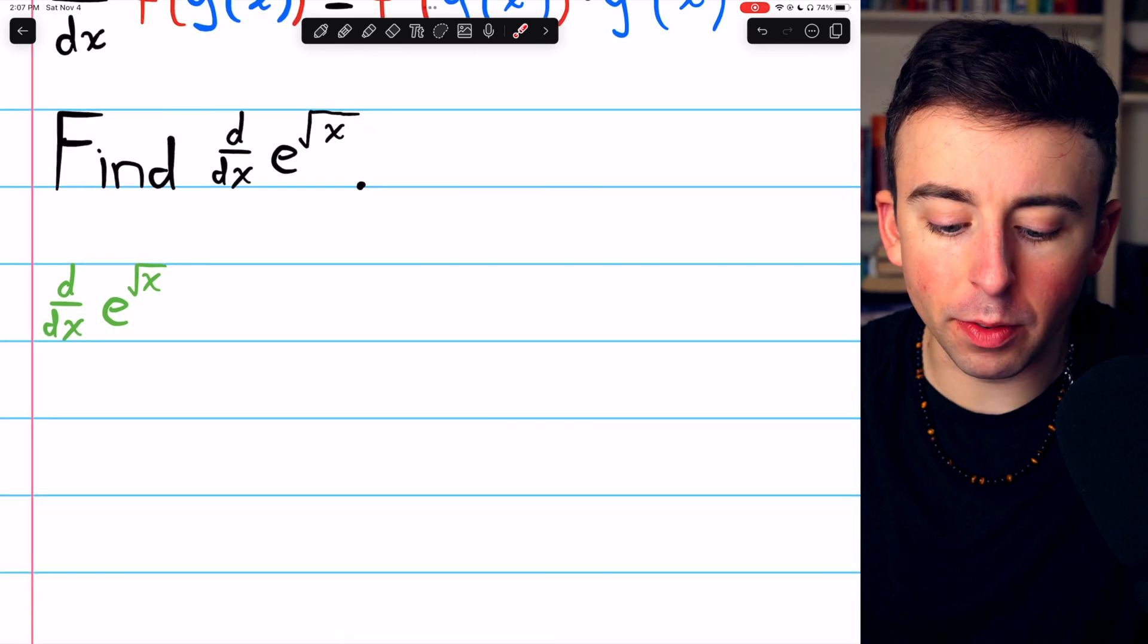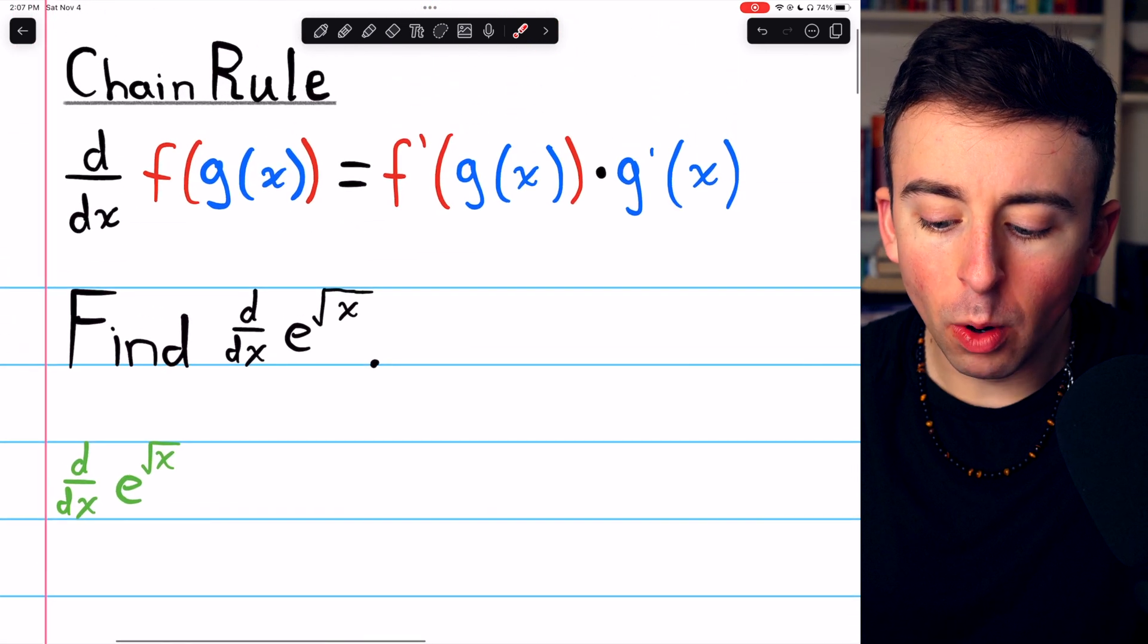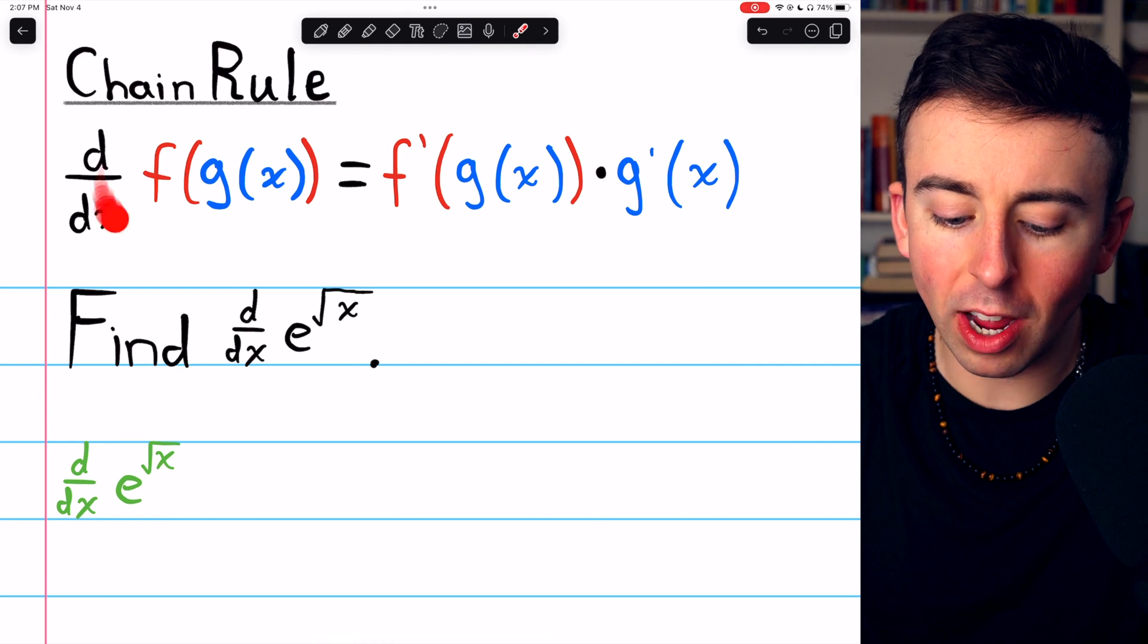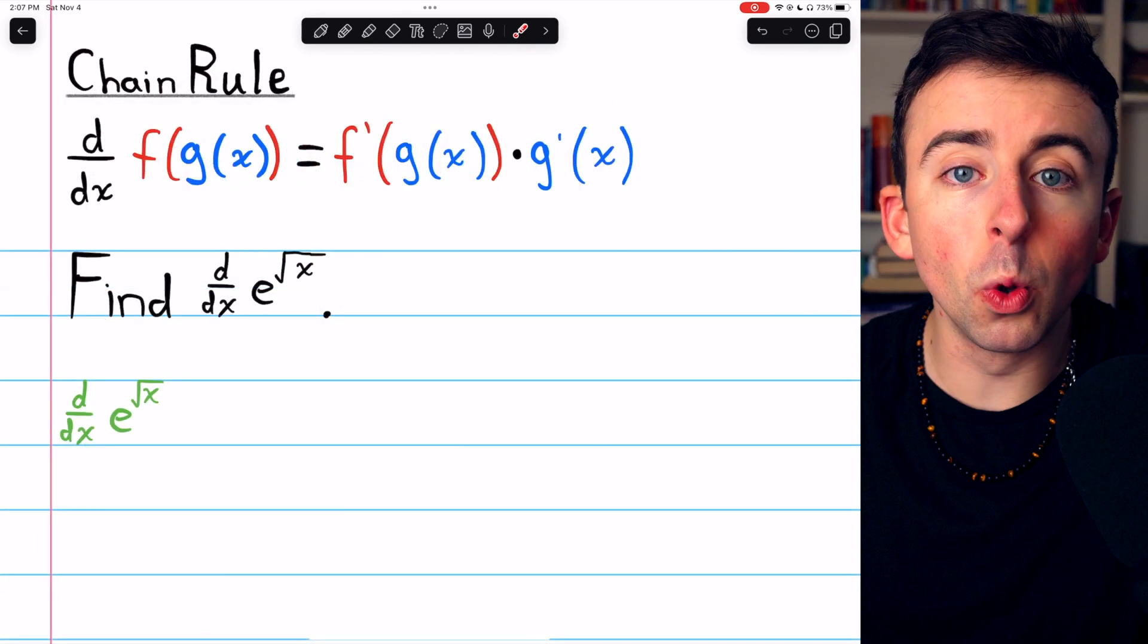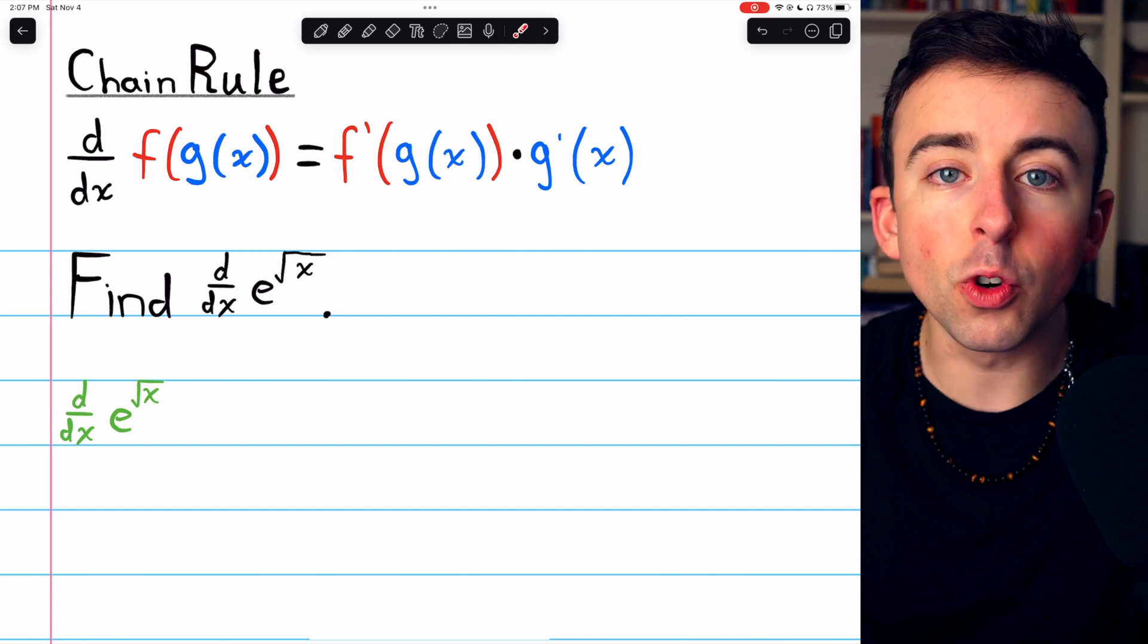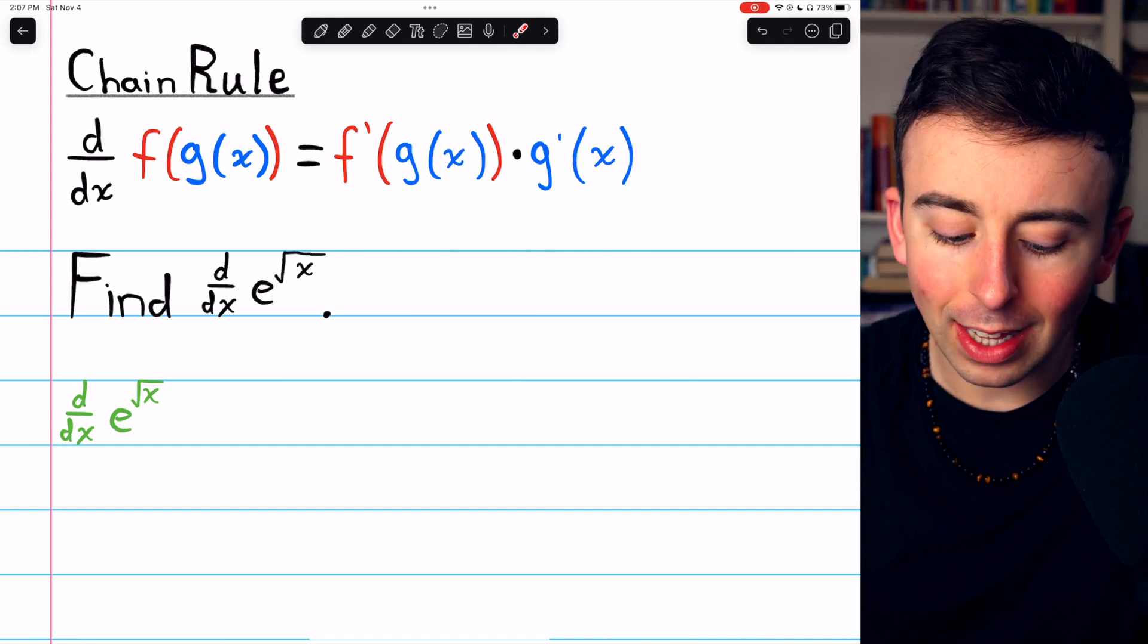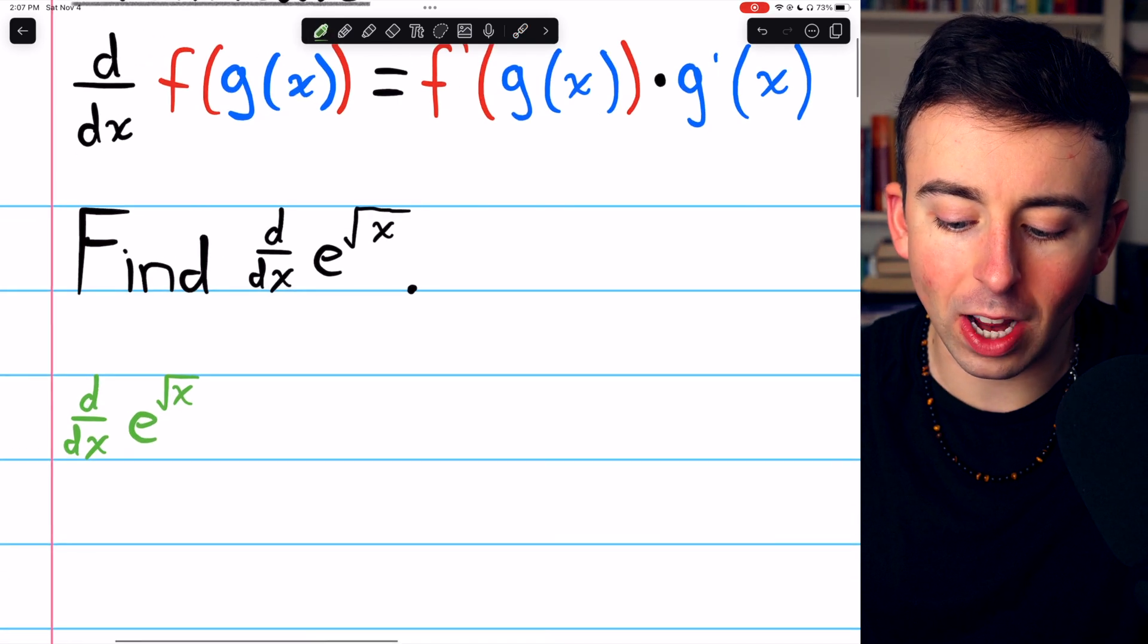So to take the derivative of this composite function, we're going to need the chain rule, which I've provided here. The chain rule begins with f prime of g of x, the derivative of the outside function, leaving the inside function unchanged.